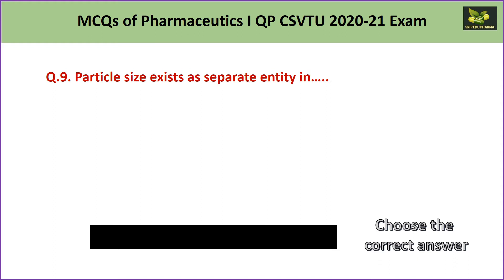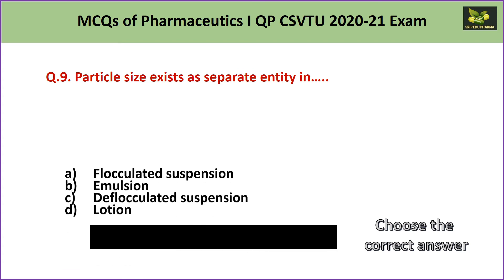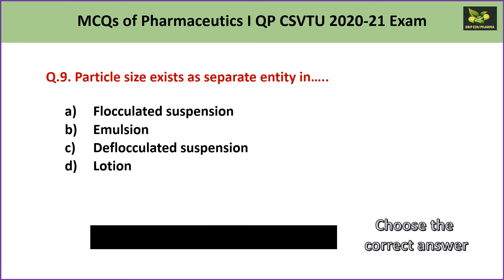Question number 9: Particle size exists as a separate entity in A. flocculated suspension, B. emulsion, C. deflocculated suspension, or D. lotion. The answer is C — deflocculated suspension — because in deflocculated suspensions, particles exist as separate individual entities.